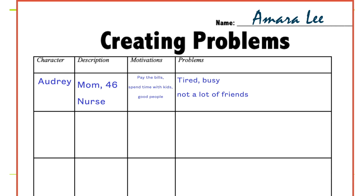Now Audrey has some problems. Like every mom who's 46 and works full time, she's tired, she's busy, and she doesn't have a lot of friends. She comes home from work — there are dishes to do, lawns to mow, laundry to put away, dinner to make, kids to help with homework. She doesn't have a lot of friends because all her friends are her age and they're all moms and nurses too — too busy to call anyone. And right now, Audrey just had a patient who passed away at the hospital. She has to come home to her kids tired, with bills to pay, wanting to spend time with them — but she also just wants a minute to grieve, and she doesn't have a minute to grieve. So now she has a problem.